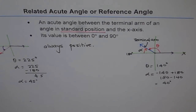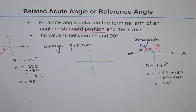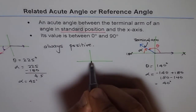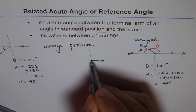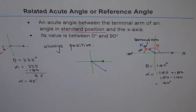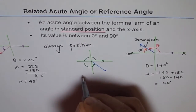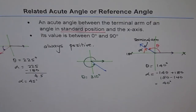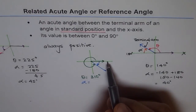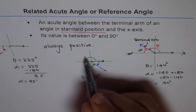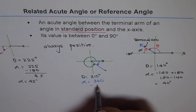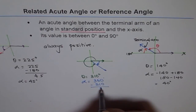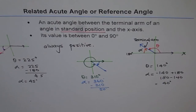Similarly, if we have the terminal arm in quadrant 4 — let's say the initial arm is here, the terminal arm is here, and theta equals 310 degrees — then how much is alpha, the related acute angle? Alpha is the angle between the terminal arm and the horizontal x-axis. The total is 360, so alpha is 360 minus 310, which gives 50 degrees. Therefore, in this case, alpha is 50 degrees.